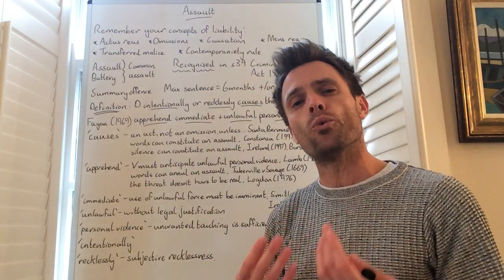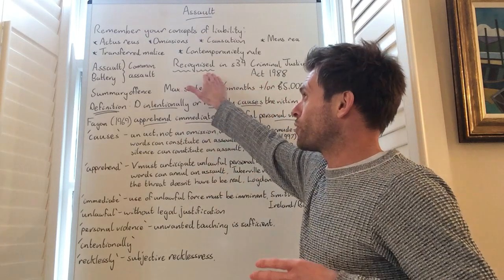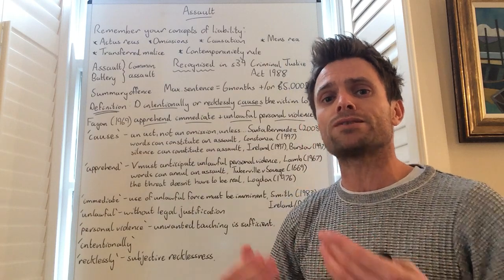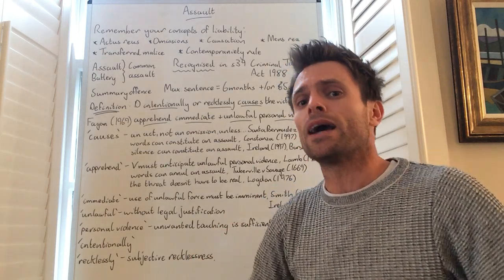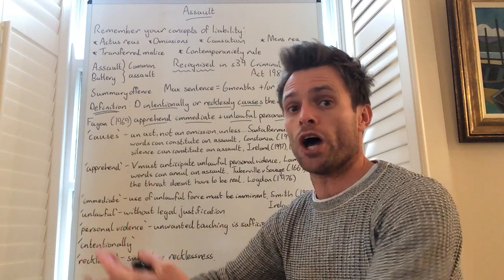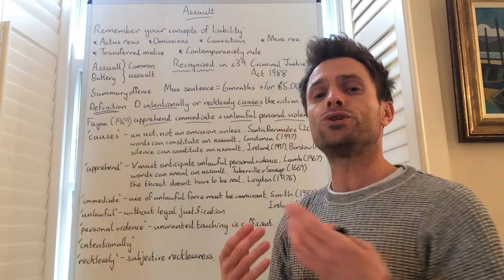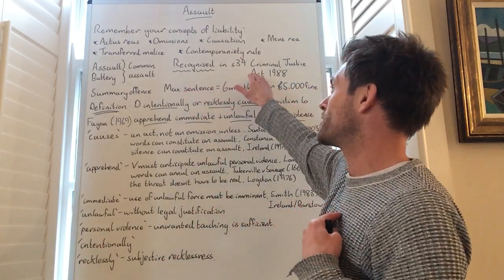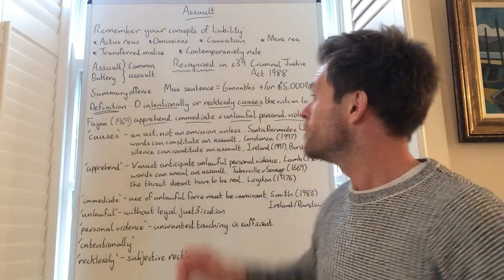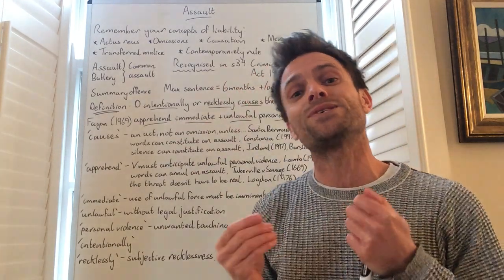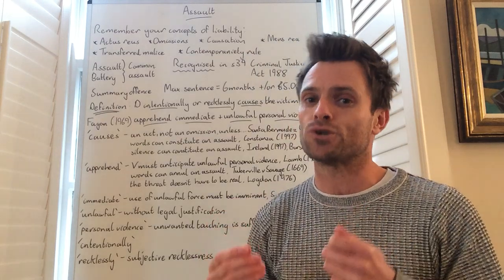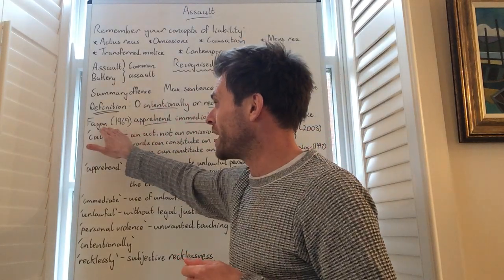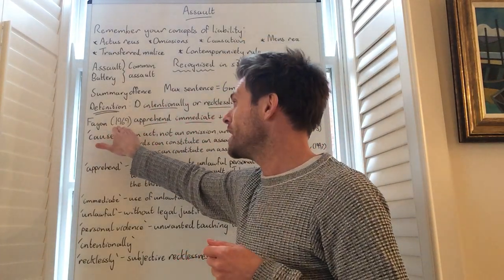The key term that you need to couple with the identification of that statute is 'recognised'. We don't say that assault, or indeed battery, comes under - we say that it's recognised in Section 39 of the Criminal Justice Act 1988, because this statute talks about the sentencing for assault and battery but it doesn't define the offence itself. The offence of assault is actually defined in the case of Fagan, 1969.